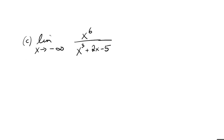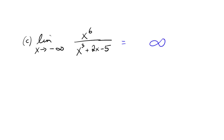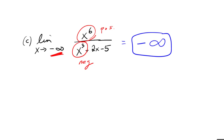One more: the limit as x approaches negative infinity of x to the sixth over x cubed plus 2x minus 5. The numerator x to the sixth dominates over the denominator x cubed, so this will be some type of infinity. Going to negative infinity, large negative numbers raised to the sixth power become positive, but raised to the third power they stay negative — so we have positive over negative, giving negative infinity.